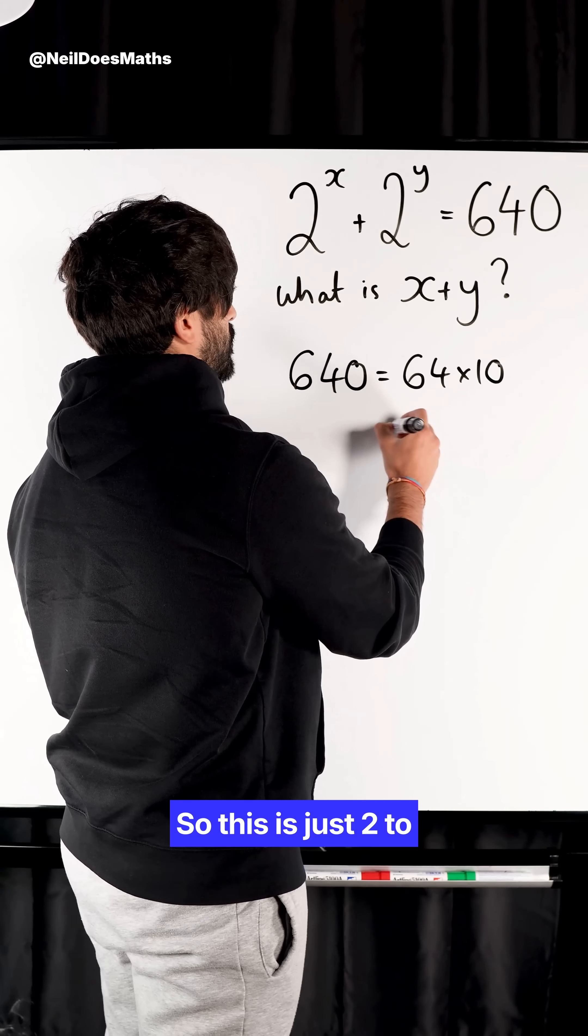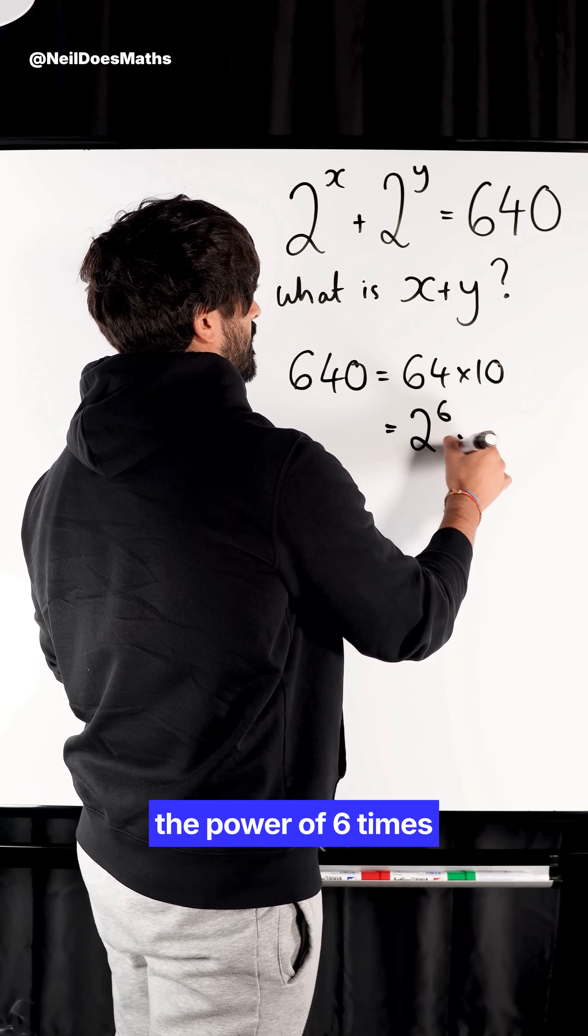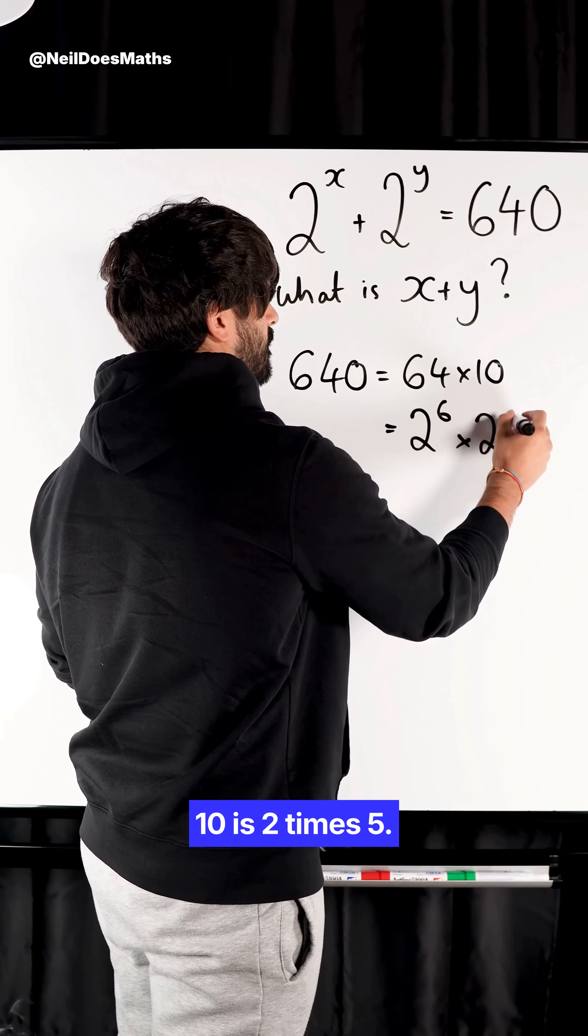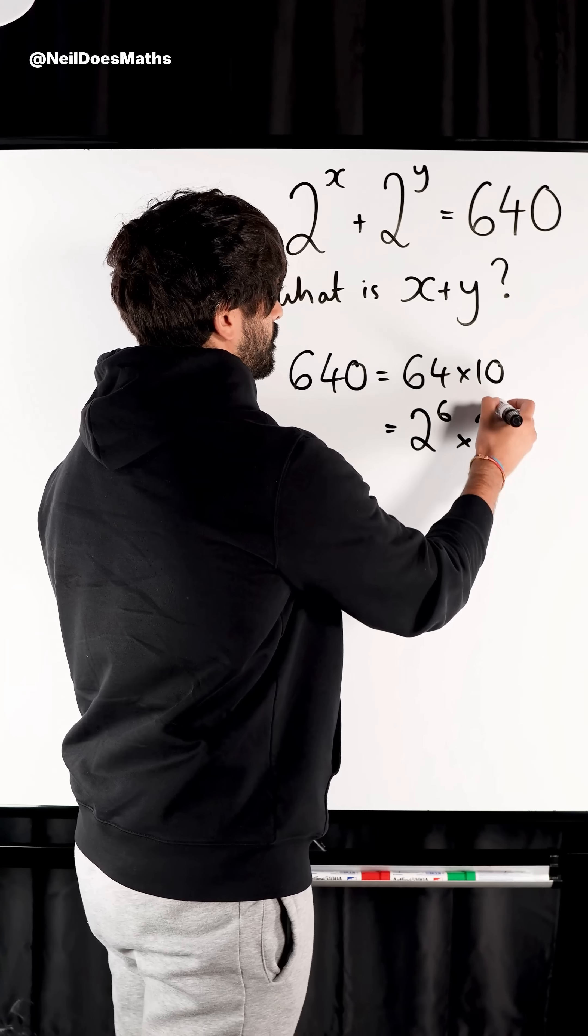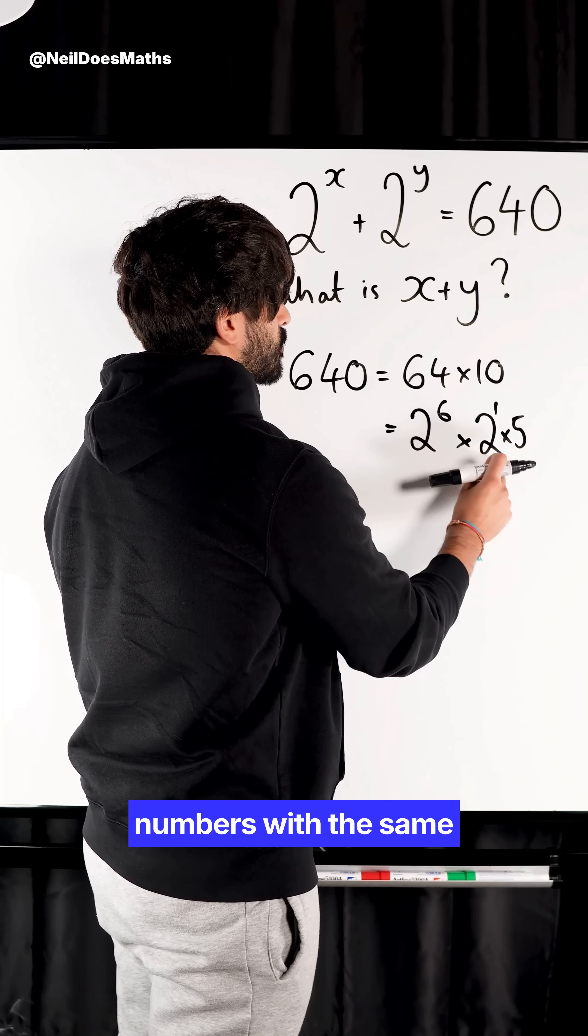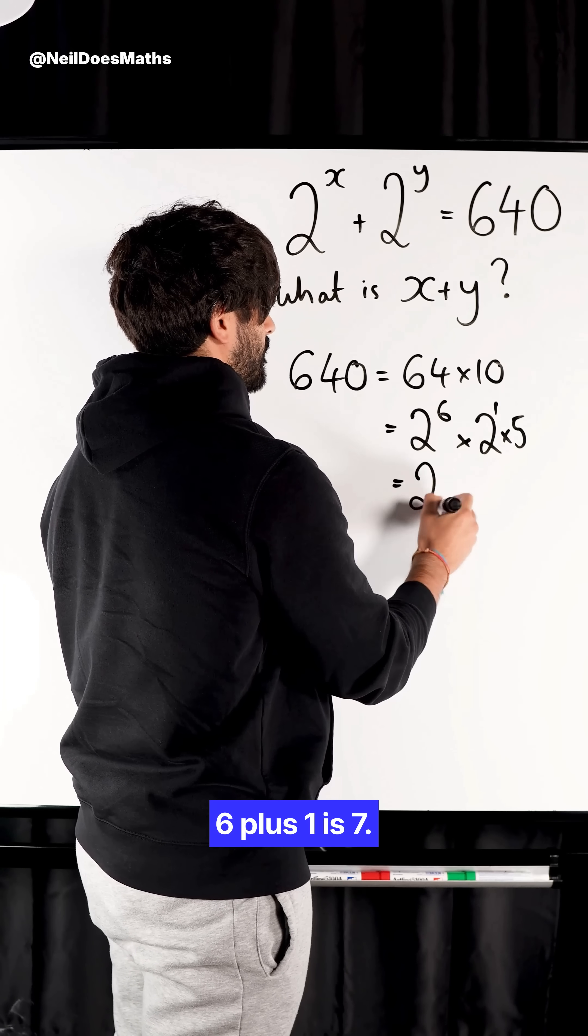So this is just 2 to the power of 6 times 10, which is 2 times 5. Now I can simplify this. This just says 2 to the power of 1. Now when I multiply two numbers with the same base, I add the powers: 6 plus 1 is 7.